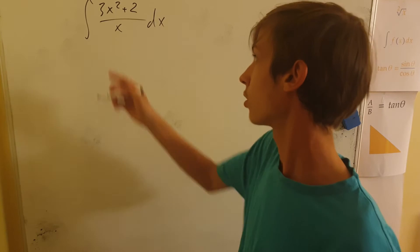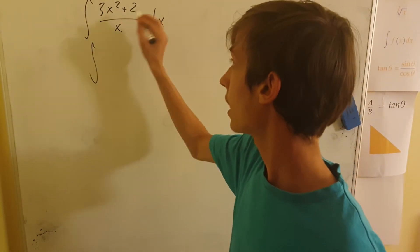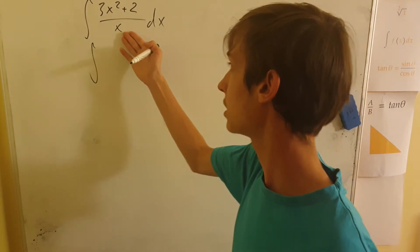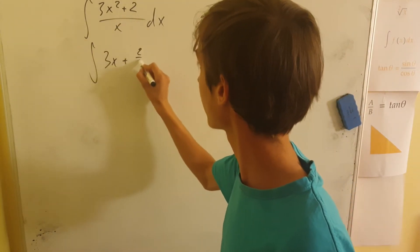Now, we should first rewrite this thing. So this is entire derivation and we will just rewrite the argument. We can rewrite the argument as basically dividing it by the x, so we will get 3x plus 2 over x dx.